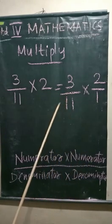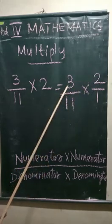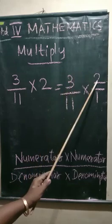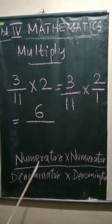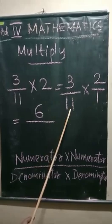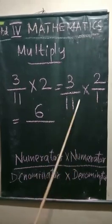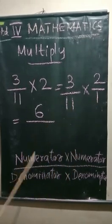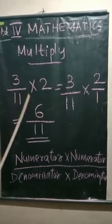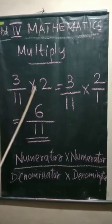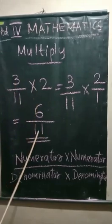What are the numerators? 3 and 2 are the numerators. So, 3 twos are 6. Which are the denominators? 11 and 1, so 11 ones are 11. So, 3 by 11 into 2 equals 6 by 11.